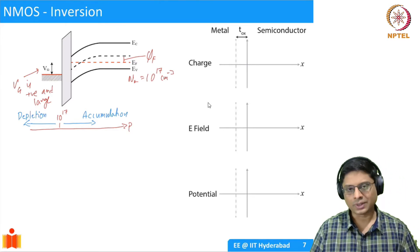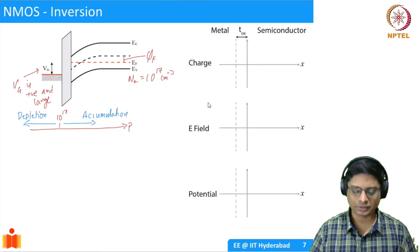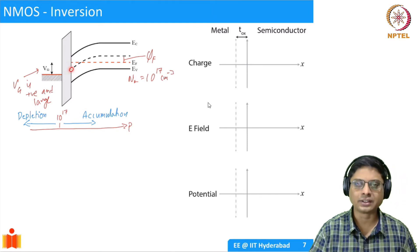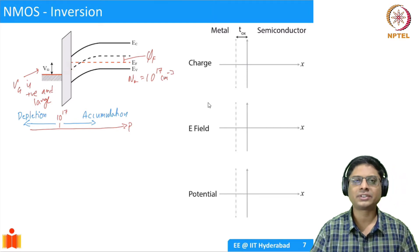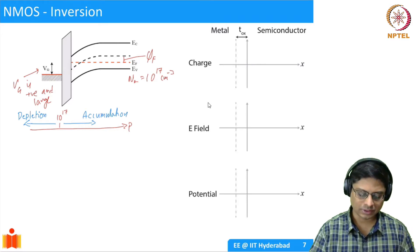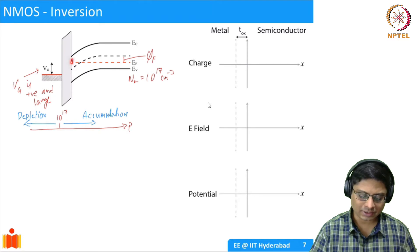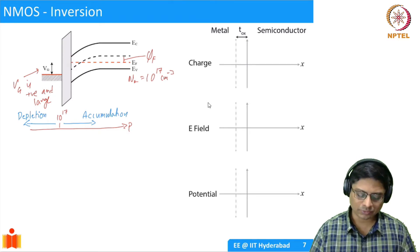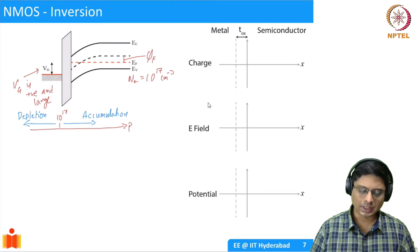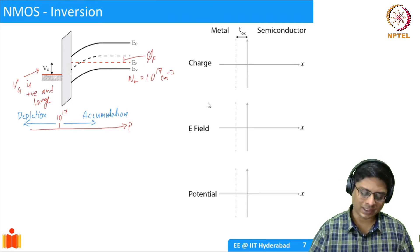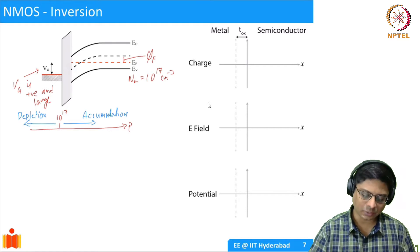Once the Fermi level at the surface crosses EI, the hole concentration becomes less than the intrinsic hole concentration. What you have now is basically the Fermi level closer to EC. Because of that, we have depleted the holes, and as we keep increasing the gate voltage we move further into this regime.